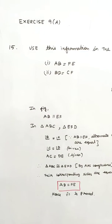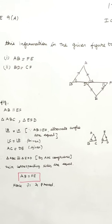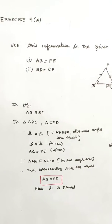Exercise 9A, 15th sum. Using this information in the given figure, to prove AB equal to FE and BD equal to CF.